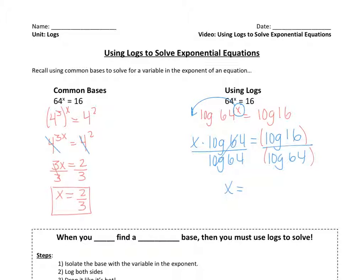Pause the video until you've done so. You should be getting the same thing. You should be getting two-thirds. Now, obviously, common bases is much quicker.